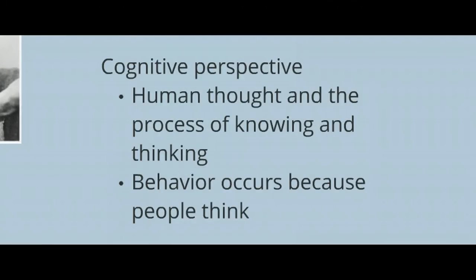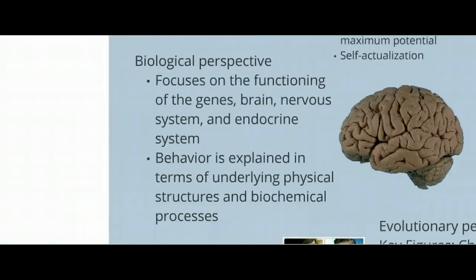Cognitive psychology looks at human thought and the process of knowing and thinking. They think that behavior occurs because people think, and they look at different ways of thinking. The biological perspective focuses on the functioning of genes, the brain, the nervous system, the endocrine system, and neurophysiology — like neurotransmitters.